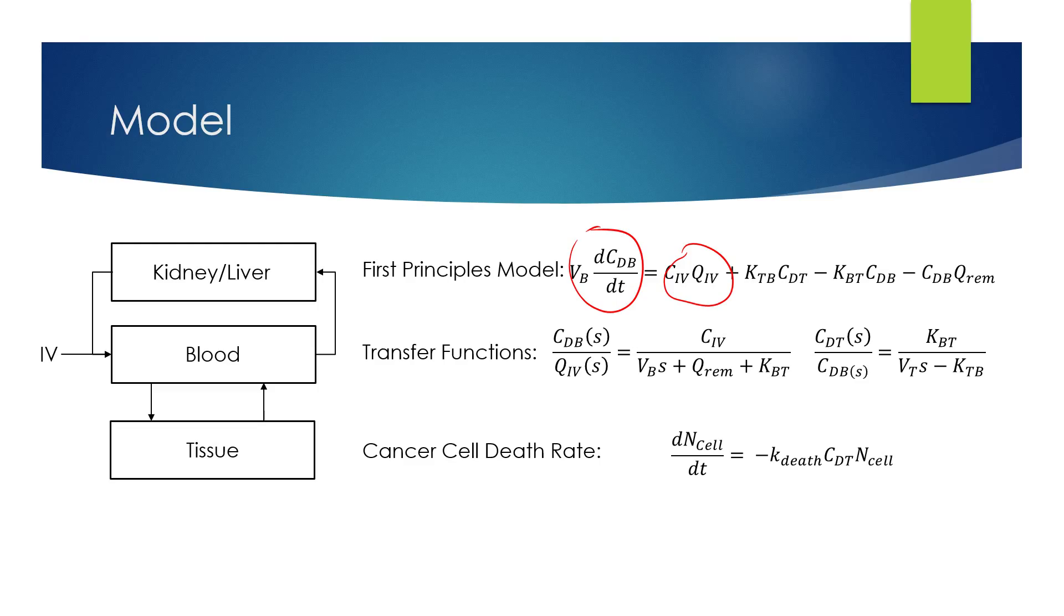So it's just basically accumulation equals in minus out, or out minus in, however you want to think of it. And so from that first principles model we were able to derive transfer functions for the concentration in the blood as function of IV flow rate, and also concentration in the tissue as a function of the concentration in the blood.